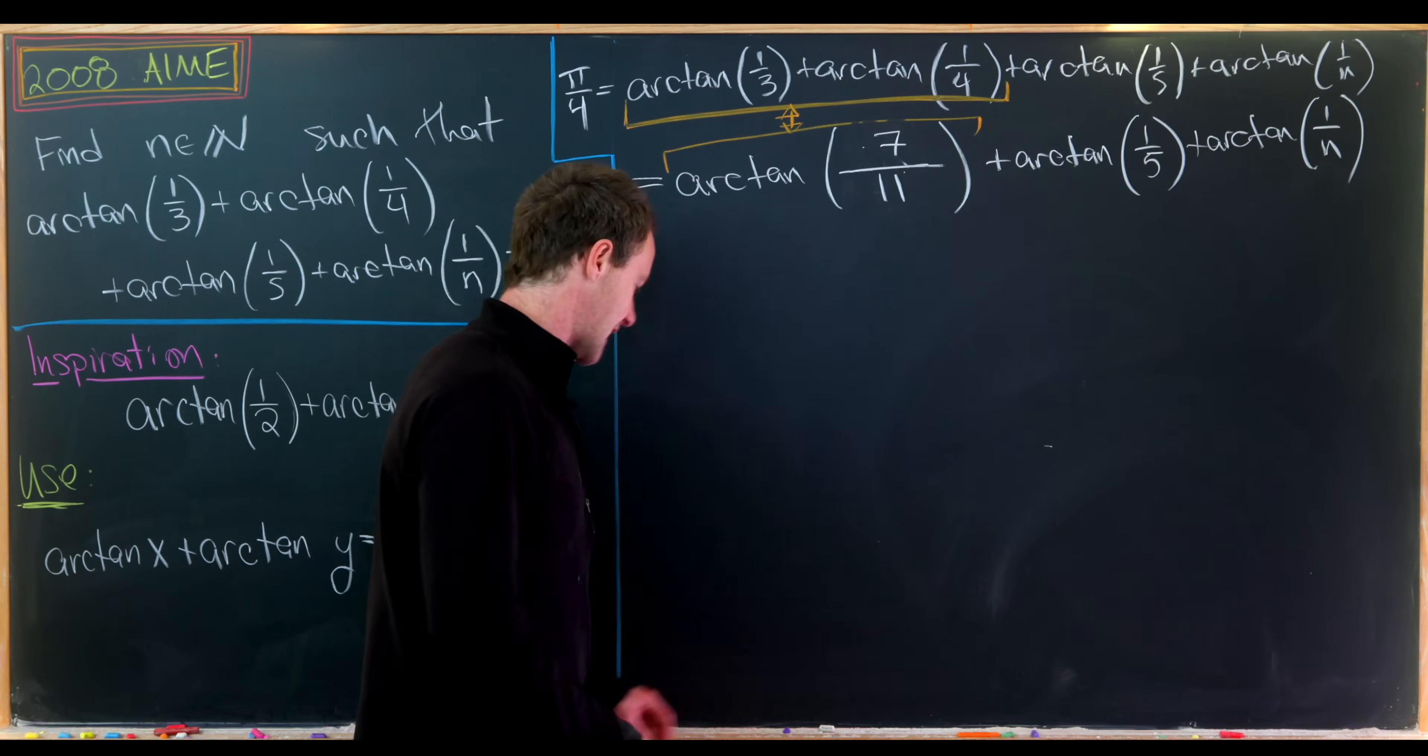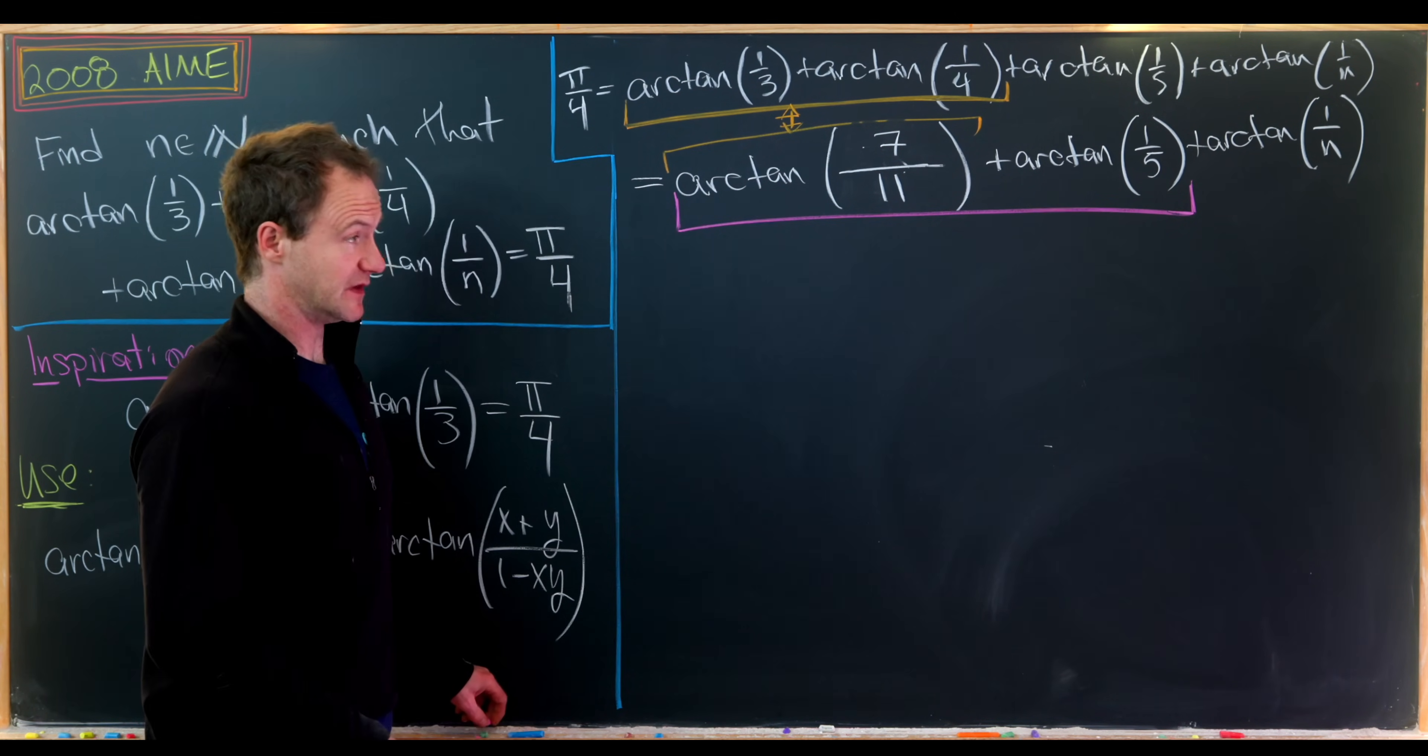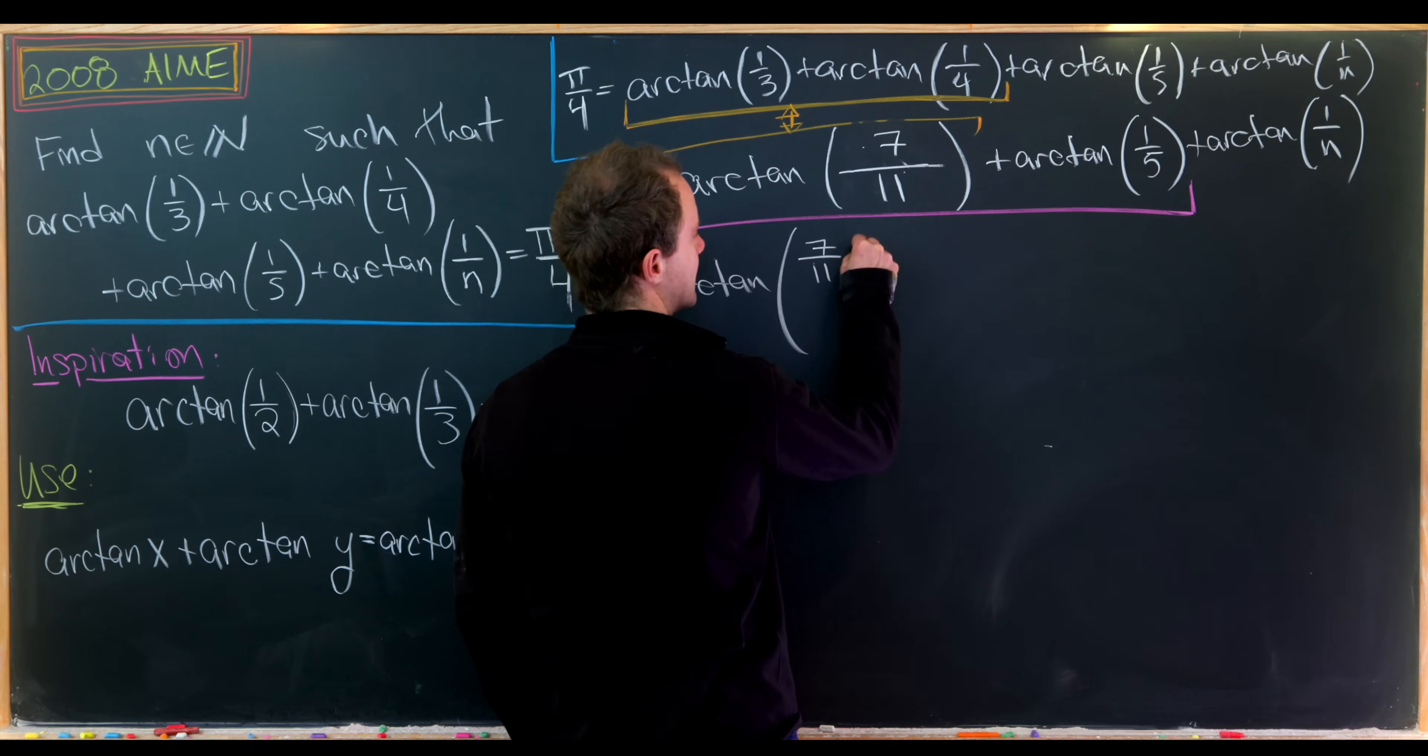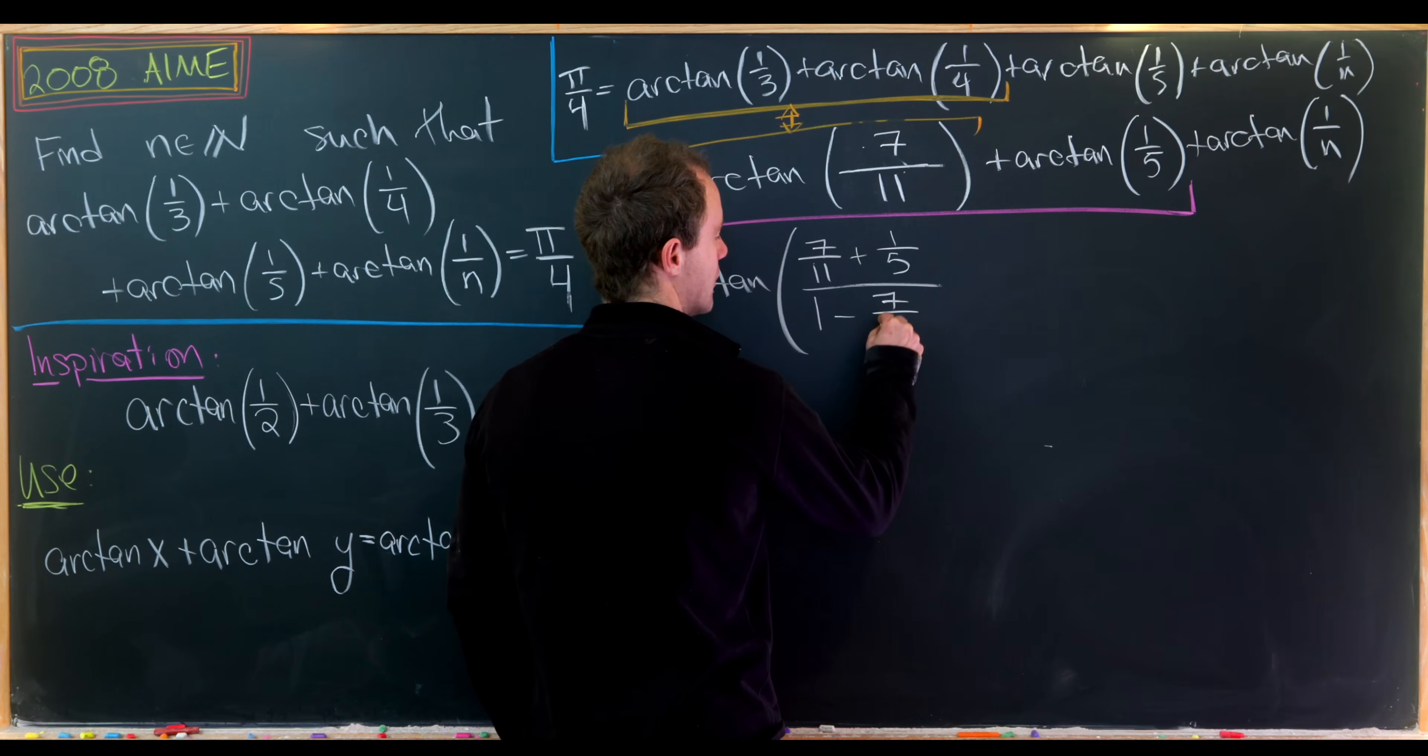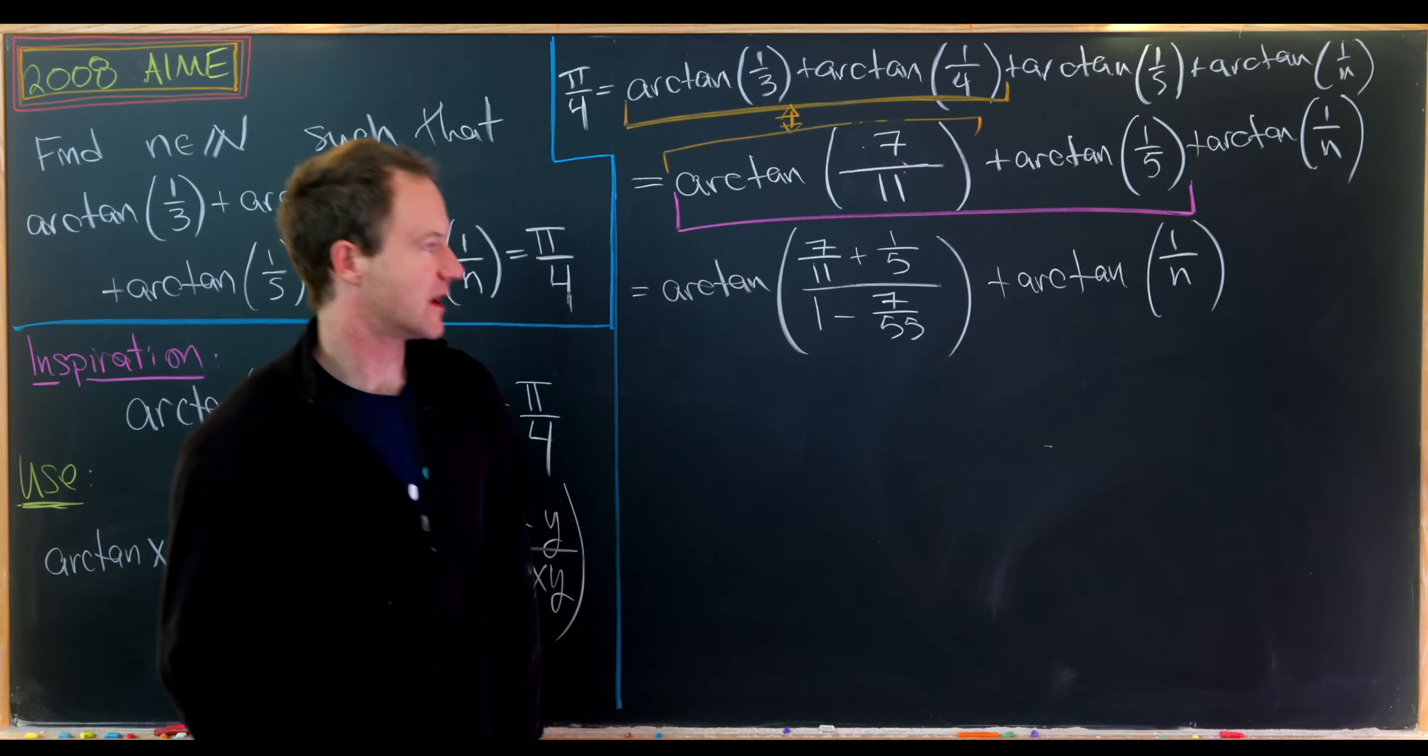Now let's make our next simplification, which will be the pairing of the new two leftmost terms. We'll have arctan((7/11 + 1/5)/(1 - 7/55)). Then we need to bring down arctan(1/n).